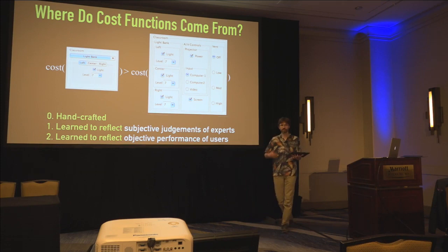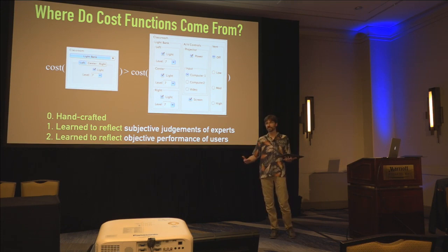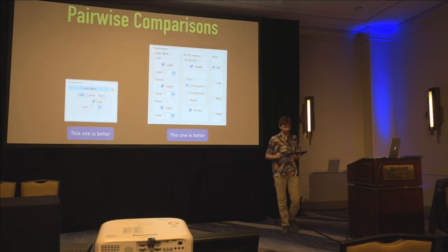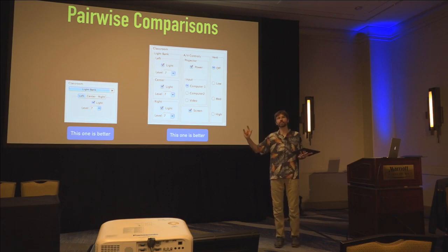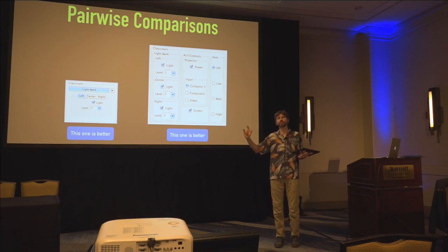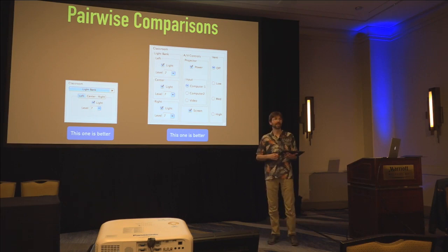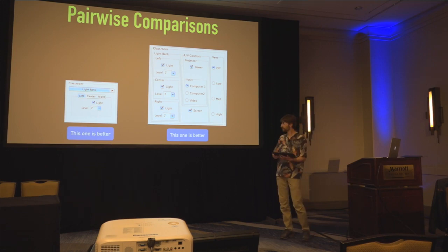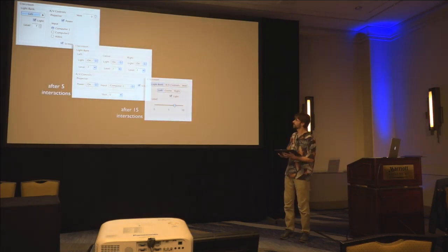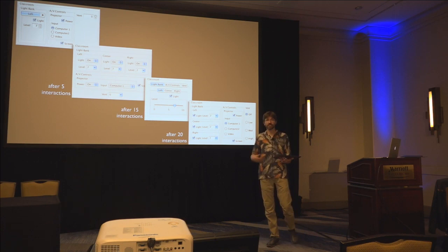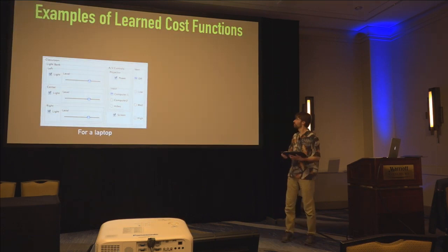The cost function would predict how long a person would take to complete basic tasks with a particular user interface design. For the expert-learned cost function, rather than rating UI quality directly, we presented experts with pairs of designs and asked which was better. Pairwise comparisons proved a more robust technique for eliciting reliable feedback. Paired with an appropriate learning algorithm, in just 20–30 interactions we could learn a cost function that reflected the expert's knowledge reasonably well.